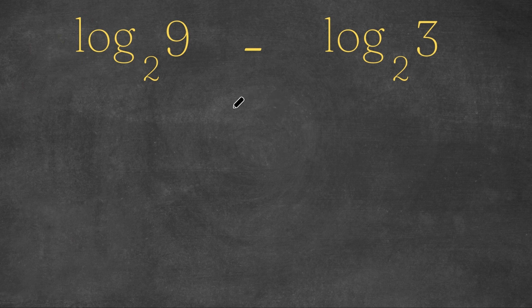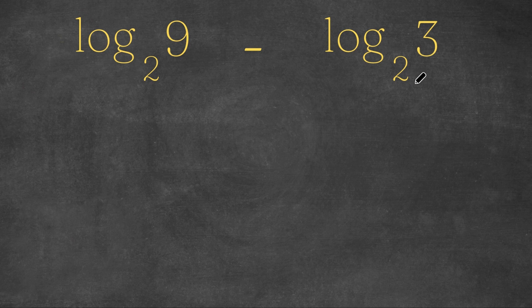Right here, we have log base 2 of 9 minus log base 2 of 3. Subtracting logarithms is actually a lot like adding logarithms. However, if you recall how to add logarithms, you would know that you multiply these two. However, in subtracting logarithms, you would do the opposite, which is division.